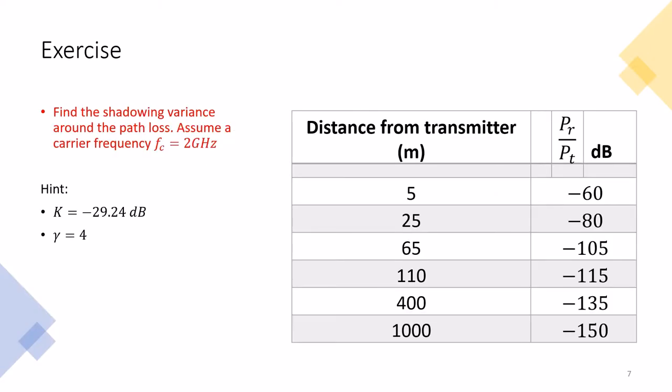Now, for you to practice, to make sure that you can get the numbers, we have seen these numbers before. Find the shadowing variance around the path loss. Assume a carrier frequency of 2 GHz. Now, to make your life easier, you can find these values, you can find k and gamma, but just to make your life easier, we are giving you k. You can double check them by fitting a line to this point. And then, your job is to find the variance. I'll not give you the variance, what the variance is, but you can write your answer in the comment section. And with more comments, we will be able to check from other comments whether you get the same answer or different. So, write your answer, expect others to write their answers, and then you can cross-check and validate your answer.